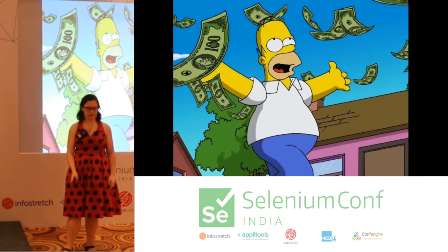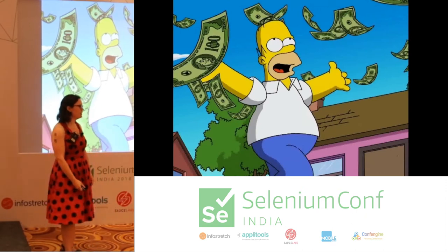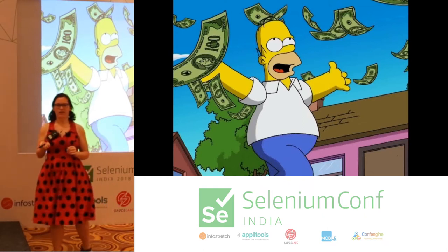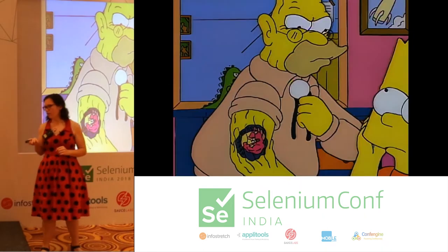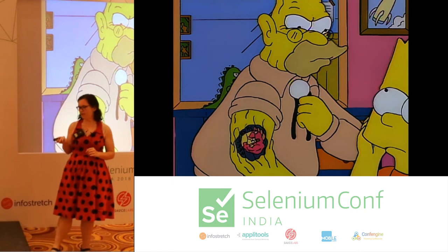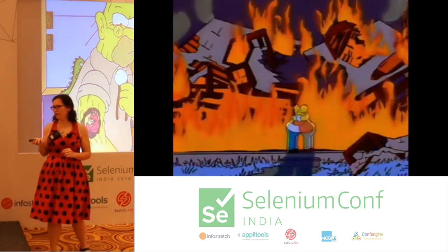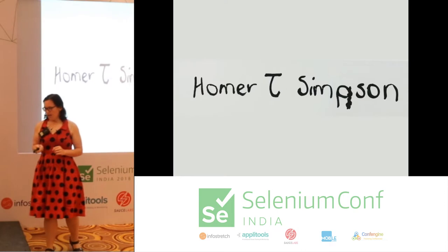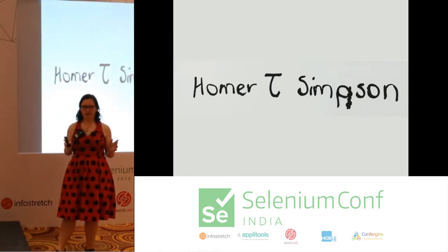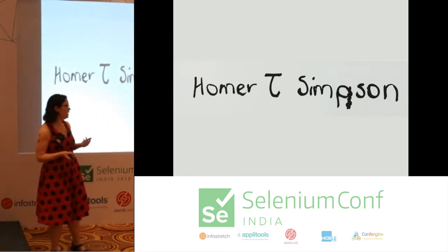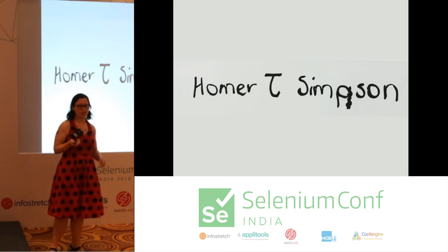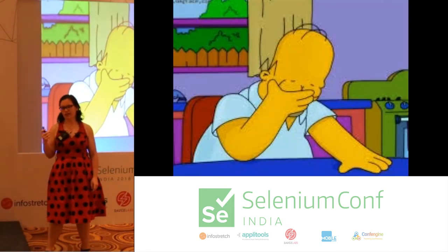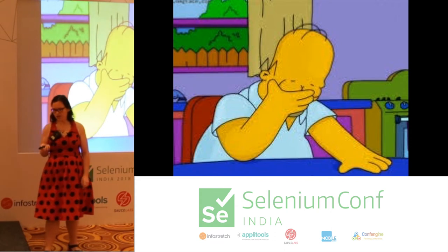Say Homer Simpson comes into a bit of money. He wins the lottery and he's going to apply for a second loan as an investment property. Unfortunately, his father Abe Simpson lives in an apartment and it burns down, so he's a bit down on his luck. Homer goes in and signs but he's not all that literate, so he signs it incorrectly. He's signing up for an investment property. His application is declined because he doesn't have a good credit rating.